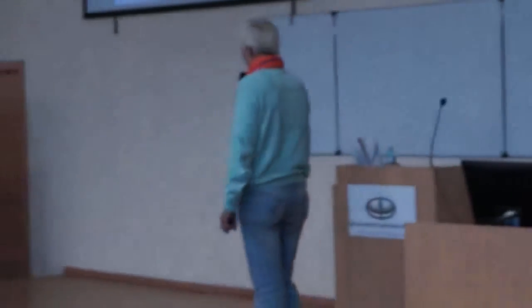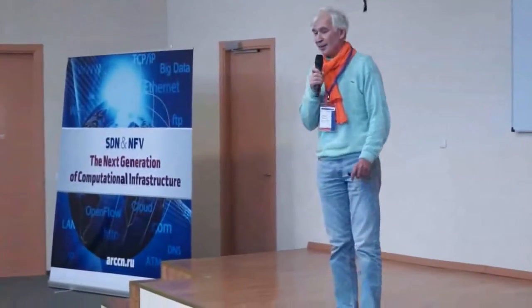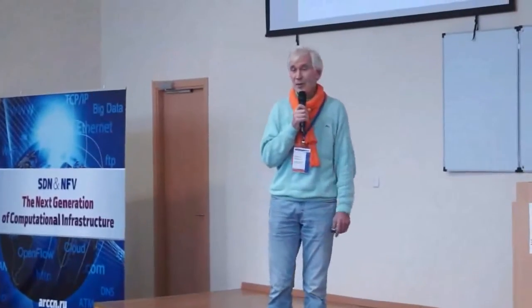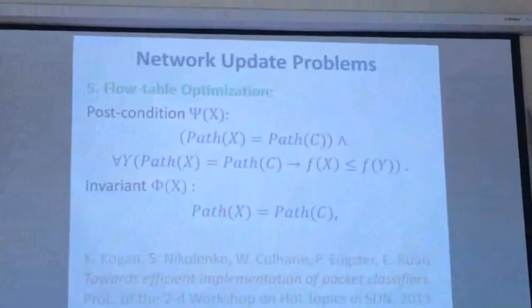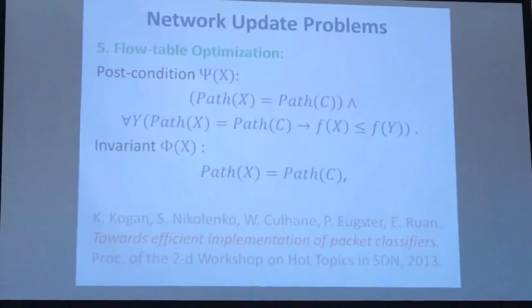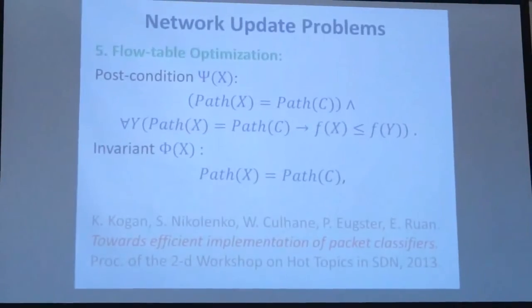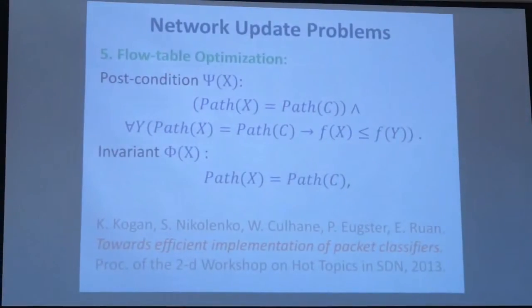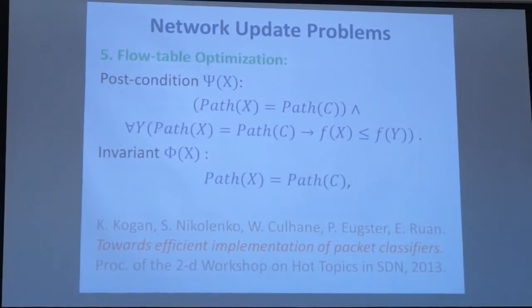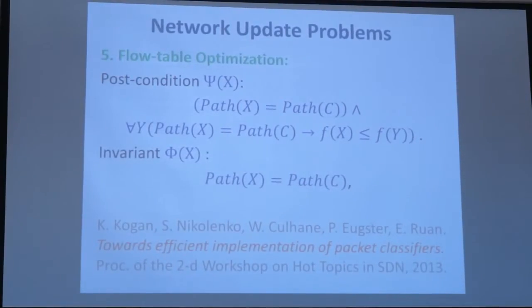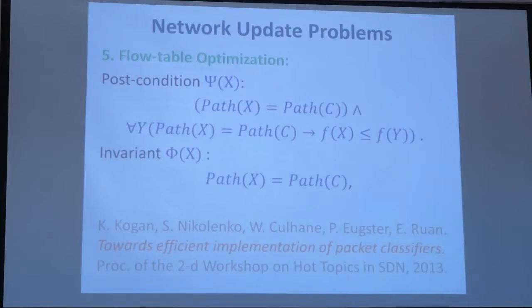The flow table optimization problem is also a kind of network update problem. In this case, our aim is to change the content of flow tables in such a way as to minimize some target function—in this case, the space consumed by the forwarding rules—while preserving the set of paths defined by the configuration.